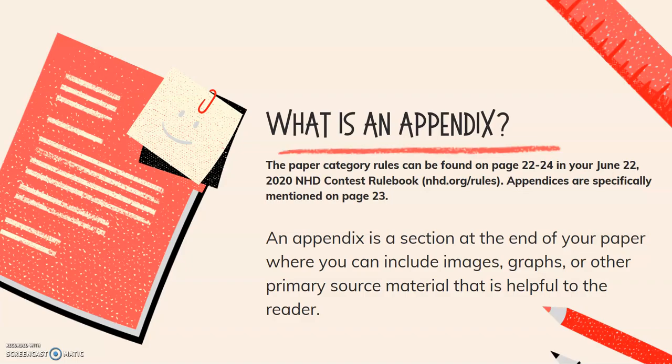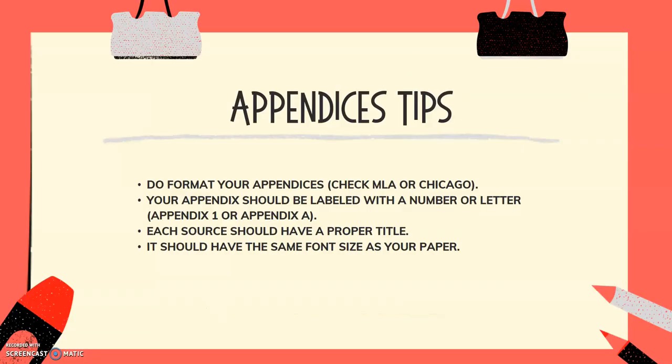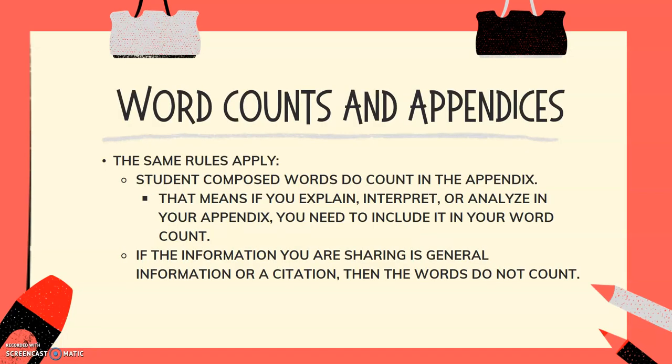We also wanted to give you some of our top tips when it comes to creating an appendix. What should we keep in mind if we decide that our paper does need an appendix? The first thing you want to do is make sure your appendix is formatted in either MLA or Chicago style, depending on what you're using throughout your paper. Your appendix should be labeled with a number or a letter — for example, Appendix 1, 2, 3 or Appendix A, B, C. Each source in your appendix should have a proper title, and it should have the same font and font size as the rest of your paper for consistency.